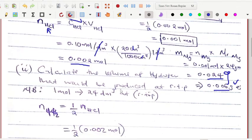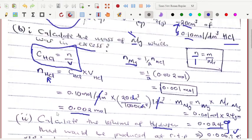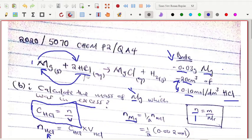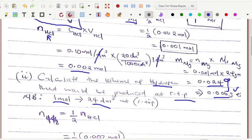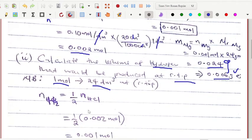The other question is to calculate the volume of hydrogen that could be produced at RTP. At RTP you need to know that one mole is equivalent to 24 decimeter cubed. You do the same - you need to find the number of moles. We use the mole ratio also. Here it is one, and there it is two, just like magnesium. It is half the number of moles of hydrochloric acid.